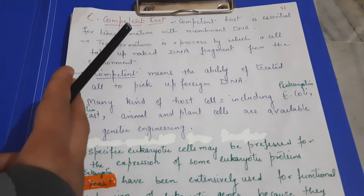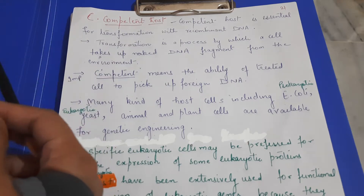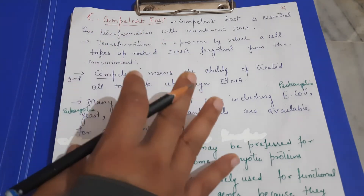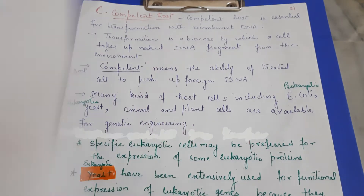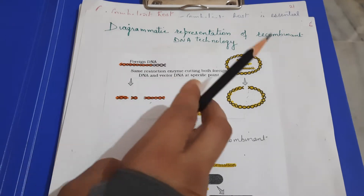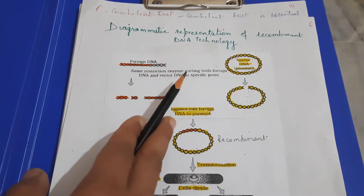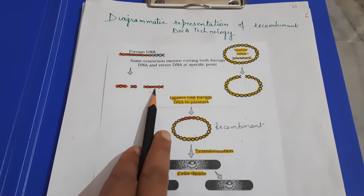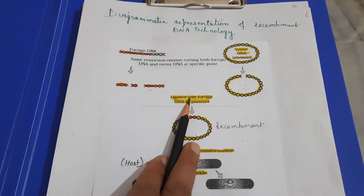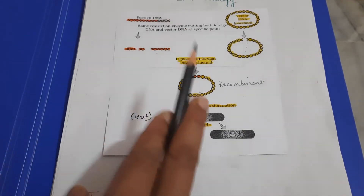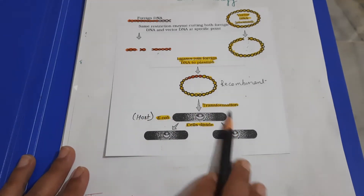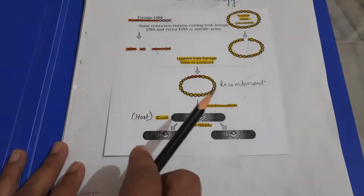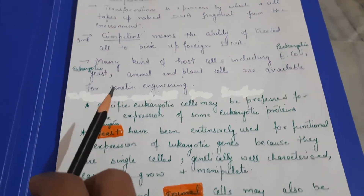In this session, we are going to discuss the topic of competent host, and after this we will discuss vectorless methods of gene transfer. As we discussed in recombinant DNA technologies, foreign DNA is cut with the help of restriction endonuclease enzyme to obtain a desired fragment of the gene of interest, which is then inserted into a vector to form recombinant DNA.